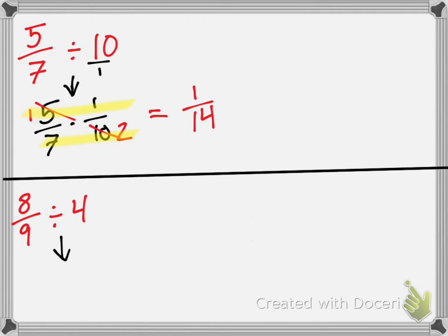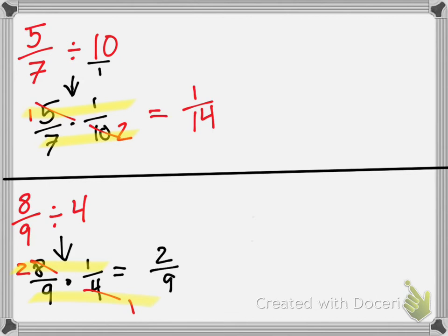Marjorie, write the next one as a multiplication sentence. Keep one over four, change to multiplication, and the inverse gives us eight over nine. Can we cross-cancel? Yes — four becomes one and eight becomes two; they're both divisible by four. Cross-multiply and we get two over nine.